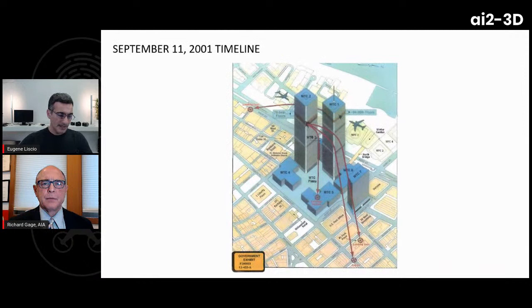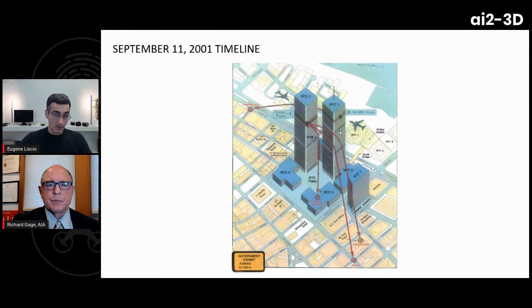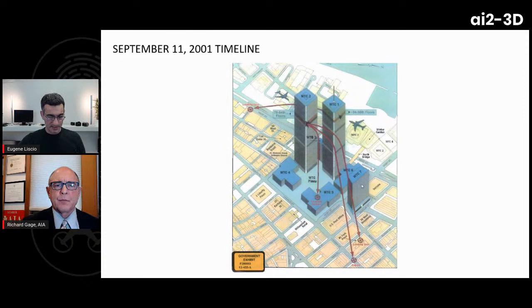WTC7 had only office fires and no aircraft fuel. The host asks whether there's any historical precedent for a similar fire-induced failure. Richard says there have been dozens of fires in skyscrapers before 9/11, and not one of them caused a complete collapse. Fireproof steel frame buildings have not collapsed due to normal office fires — not before 9/11 and not after. After 9/11 there are several notable examples of buildings completely engulfed in fire for hours that did not collapse.